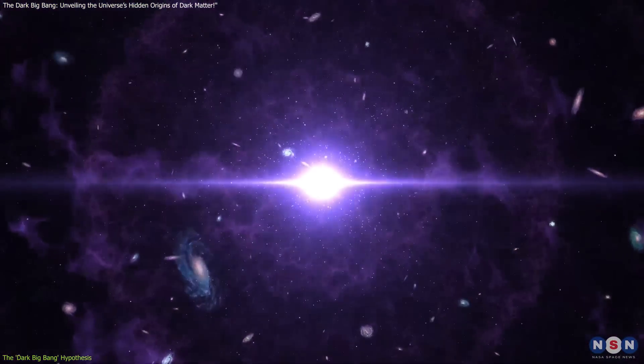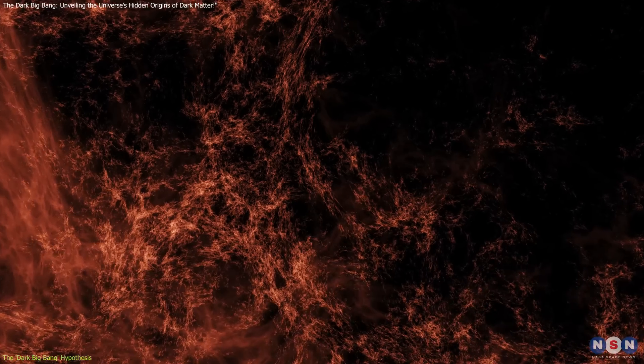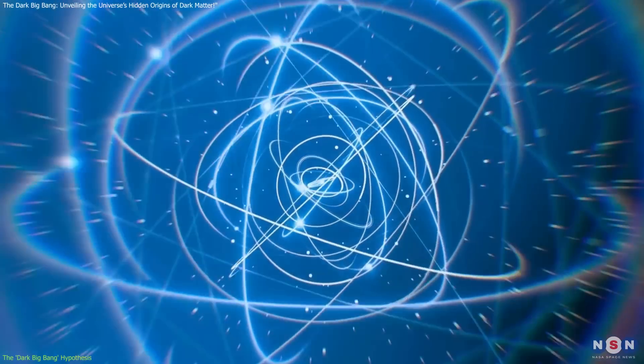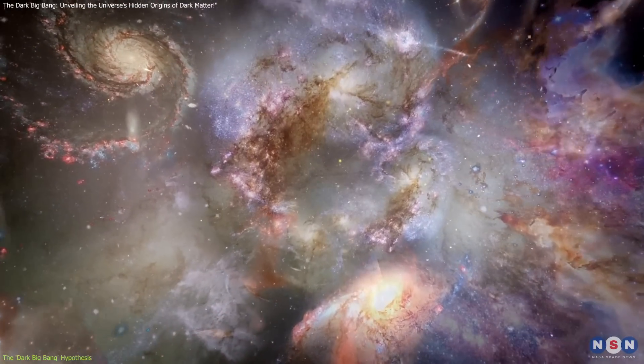For decades, scientists believed that dark matter emerged alongside ordinary matter during the Big Bang. This would mean dark matter originated from the same physical processes that gave rise to protons, neutrons, and all the visible matter we know.